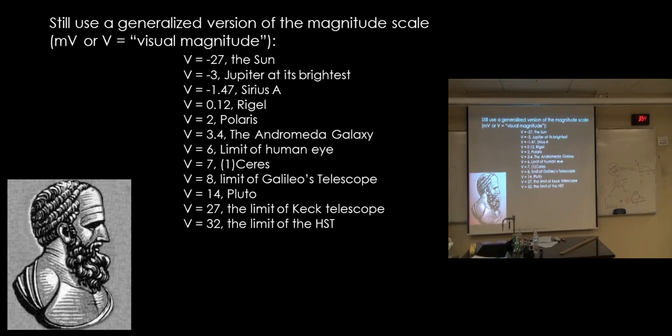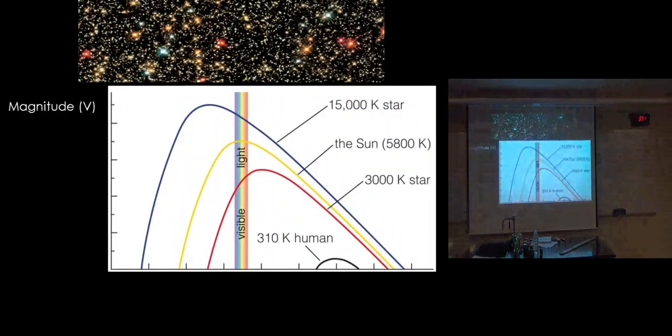So if something is negative fifth magnitude and something is second magnitude, which one appears brighter? Negative fifth, right? So this, okay, it seems okay now, but I swear this will get everybody.